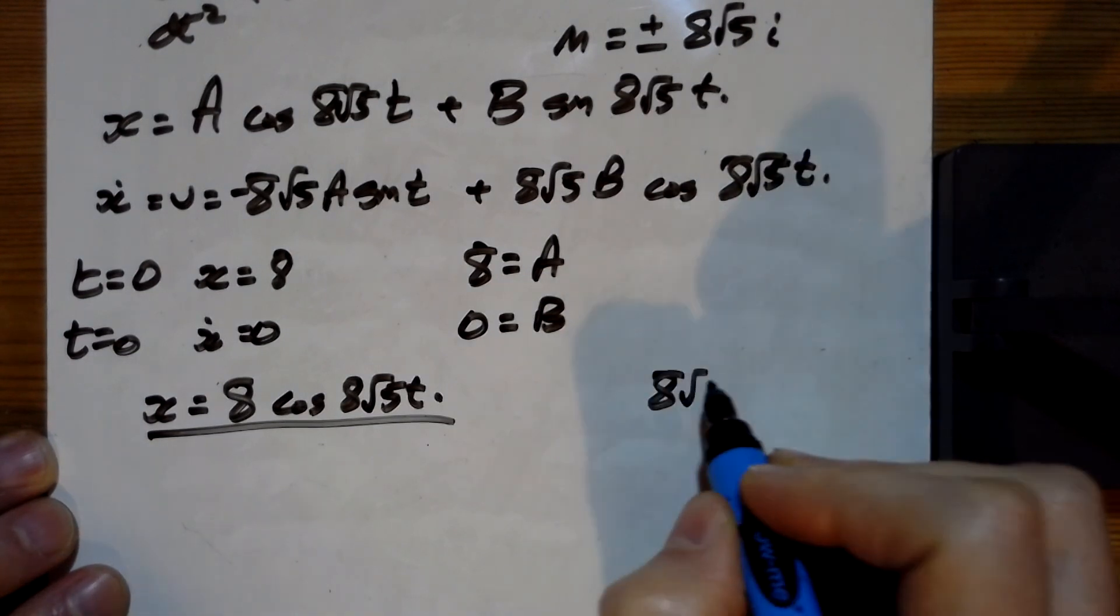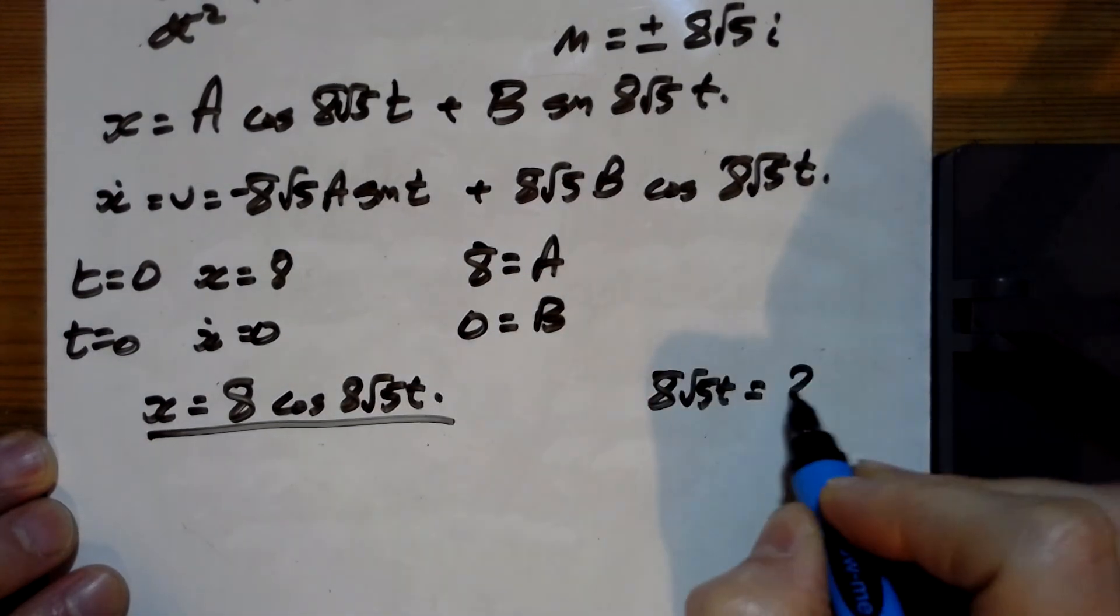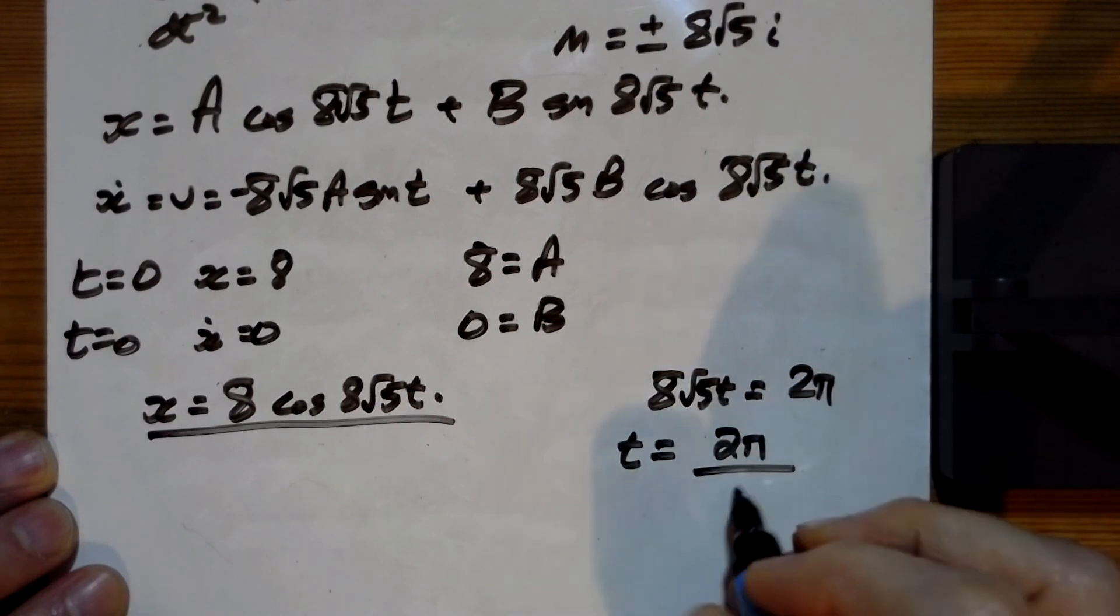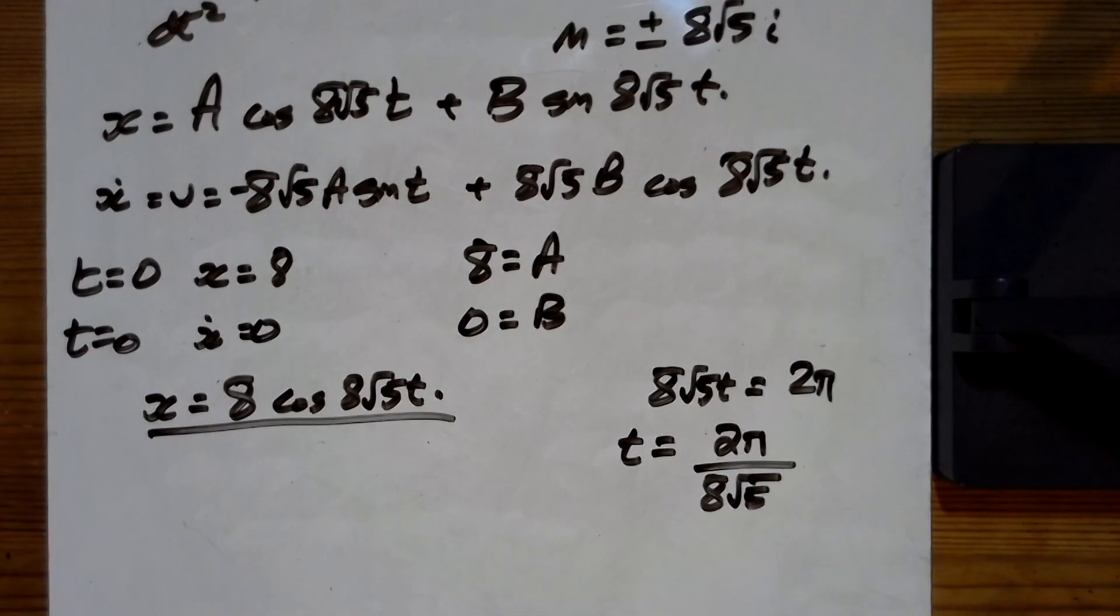oscillations: we say 8√5t is going to be 2π, so t = 2π / 8√5. You could tidy that up as well,